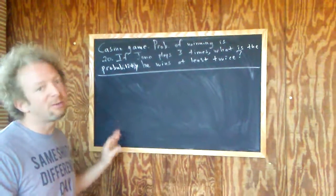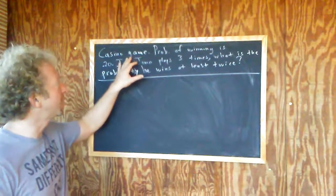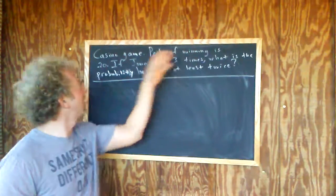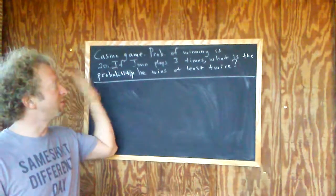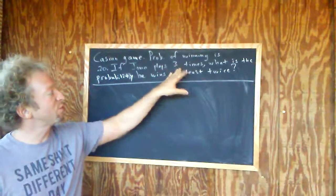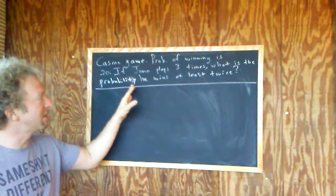I'm going to do an example of a binomial probability problem. So we have a casino game and the probability of winning is 0.20. If Jono plays this game three times, what is the probability he wins at least twice?